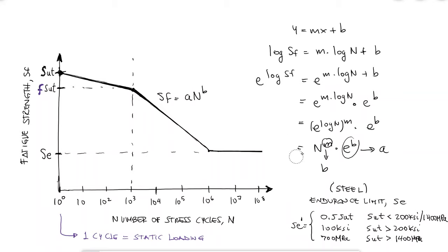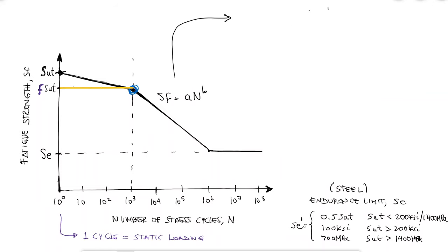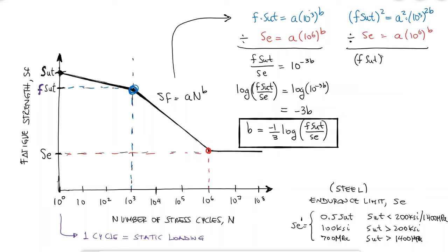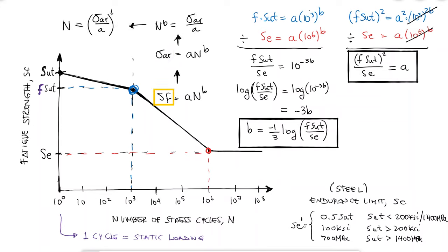If the fatigue strength SF is equal to F-SUT for N equal to 10 cubed and SF is equal to SE for N equal to 10 to the sixth, we obtain two equations with two variables A and B. If we divide the equations, we find an expression for B, and if we square the first equation and divide again, we find an expression for A. If we're looking to find how many cycles a part would last for a specific completely reversed stress, we can assume that the part will fail when that stress sigma AR is equal to or exceeds the fatigue strength SF and solve for N.